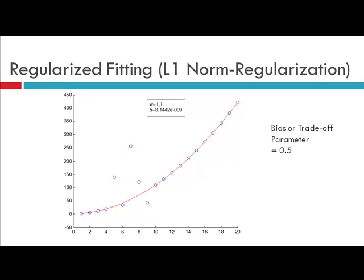Now if you regularize this with L1 norm regularization with bias parameter 0.5, then you will get exactly this curve. Don't worry about the regularization — this will form the basis of our discussion in approximately 4 lectures, where we will consider the problem only of regularization.